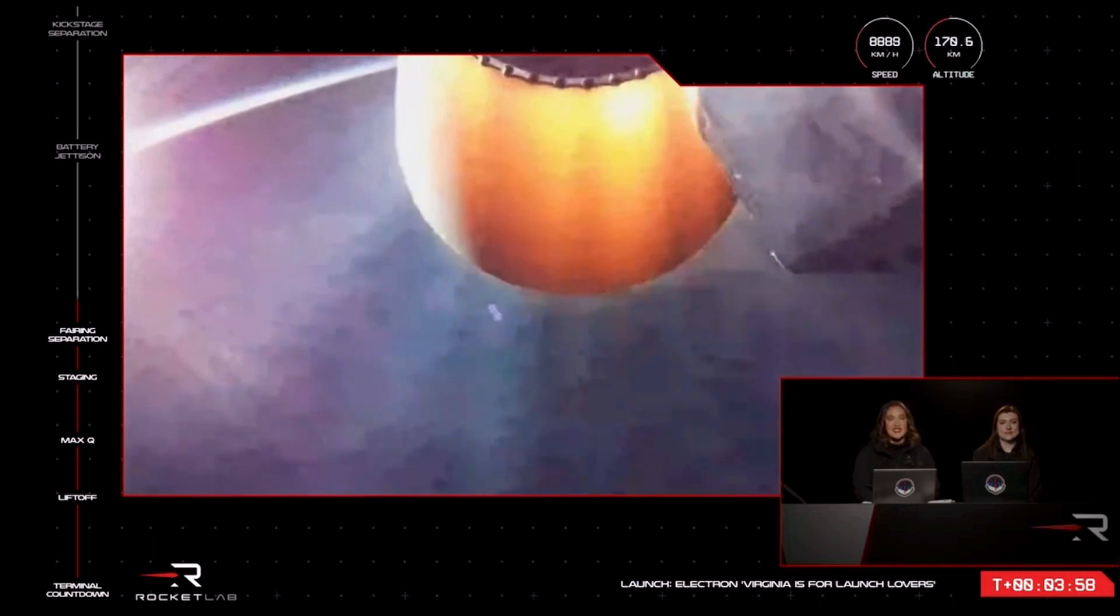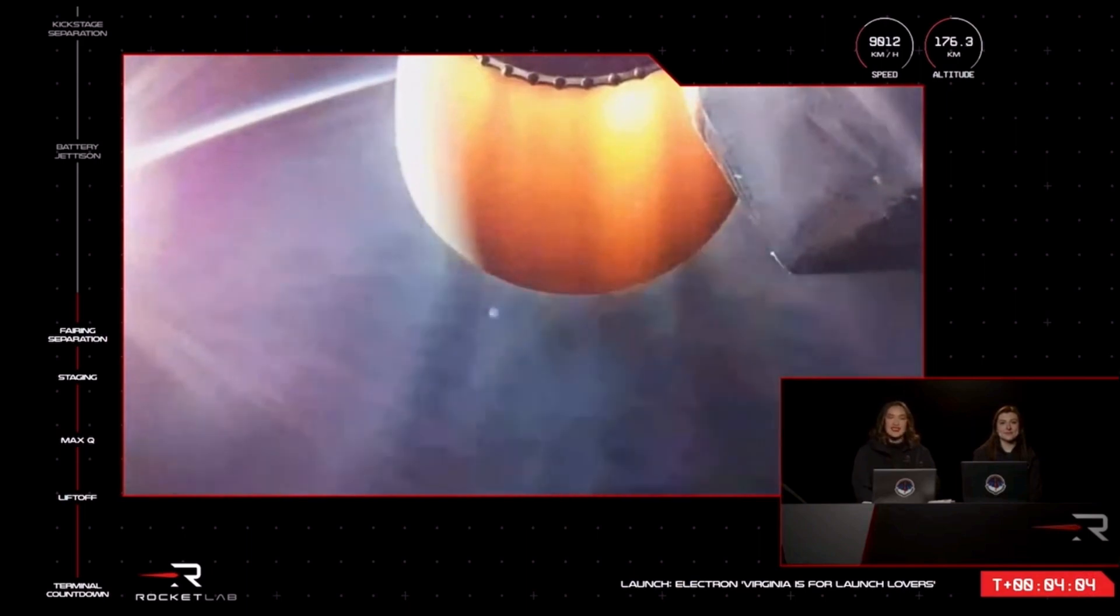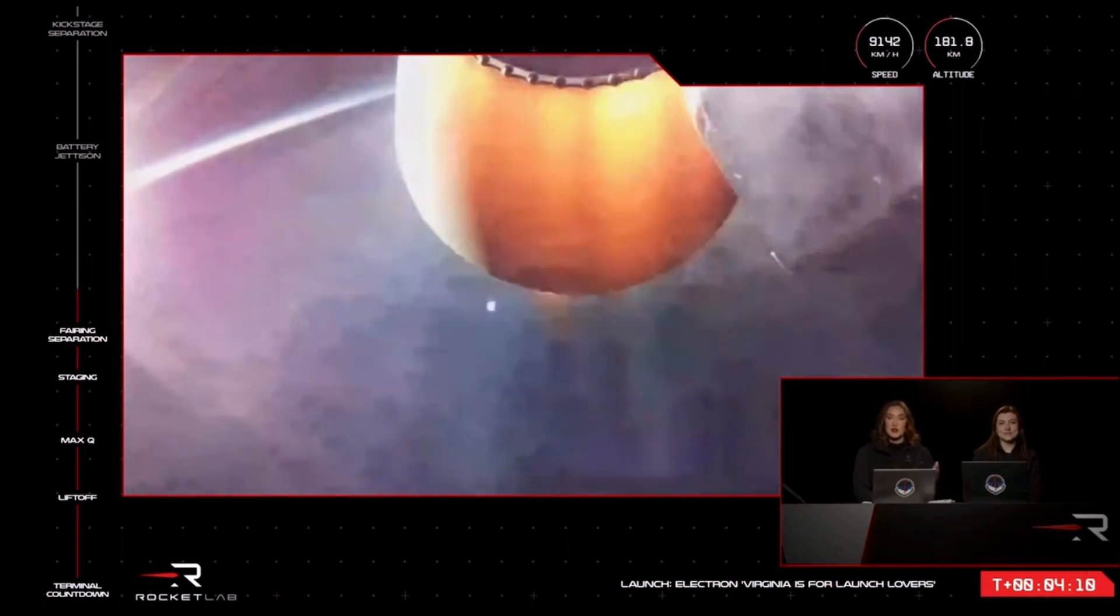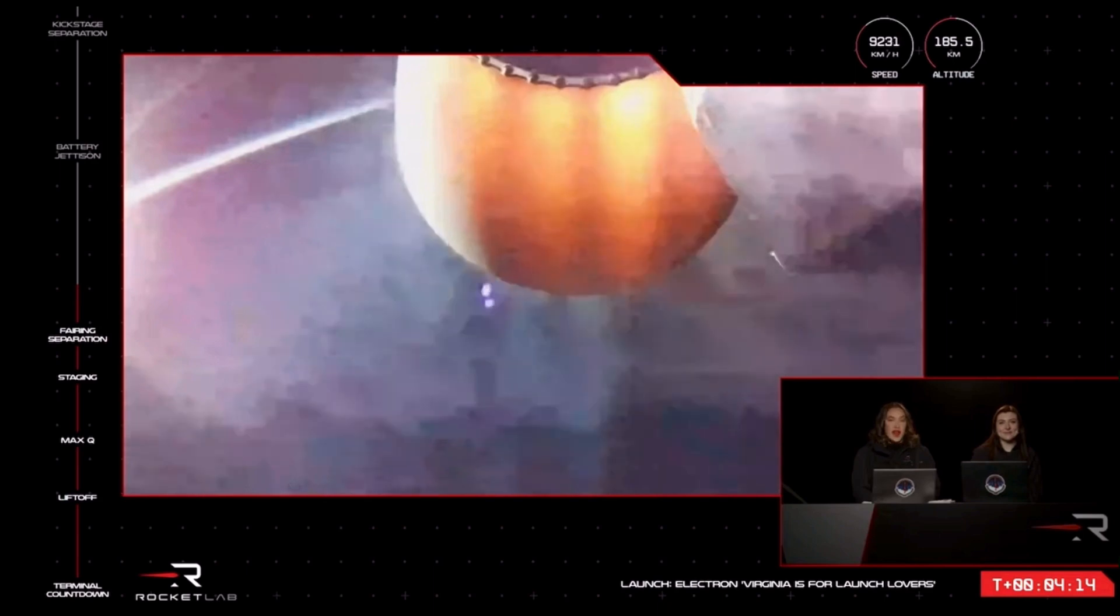The rocket's second stage is now reaching speeds of more than 9,000 kilometers an hour, powered solely by a single space-optimized Rutherford engine. The second stage will take the payload to the height of the mission's orbital altitude before it separates with the kick stage, which will carry on to insert the mission into a circular orbit.